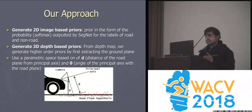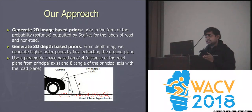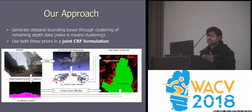Next, we generate 3D priors. We use SLAM for this purpose since we are using a single camera. We start by extracting the road from it using a parametric method, similar to the Hough transform, for separating the road from the depth map. Once we have separated the road, we separate out the obstacles by clustering on them using k-means.